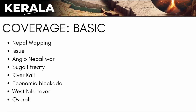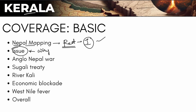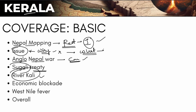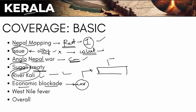So let's first see what we are going to cover. Nepal mapping relative to India, important passes, then what is the issue between India and Nepal — which area is disputed and why, and what can it lead to for both countries. Then we'll talk about the Anglo-Nepal war, the Sugauli Treaty, the River Kali, and the 2015 economic blockade. Next, we'll discuss West Nile fever and sum up.